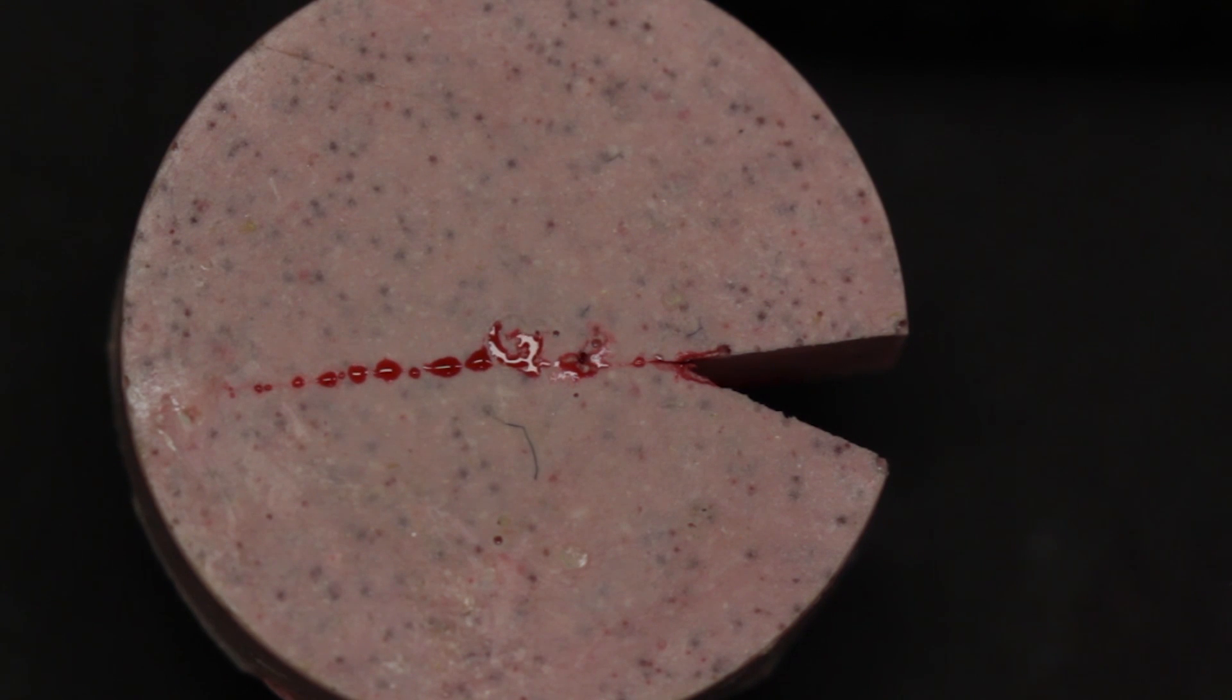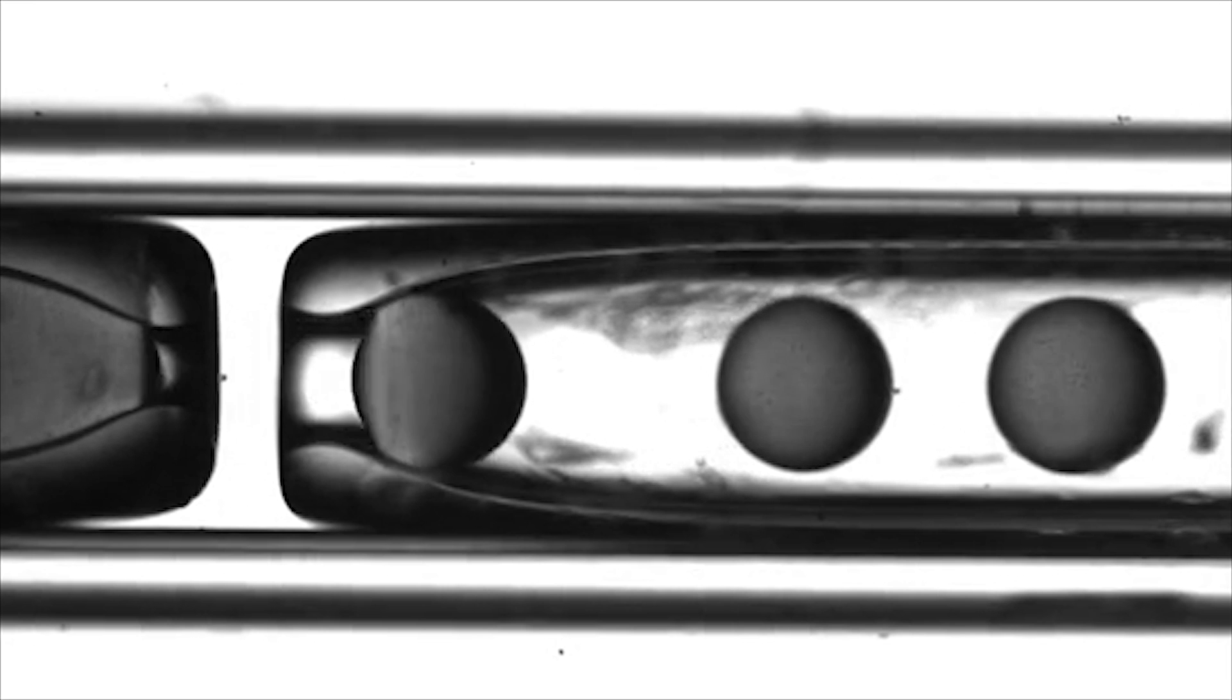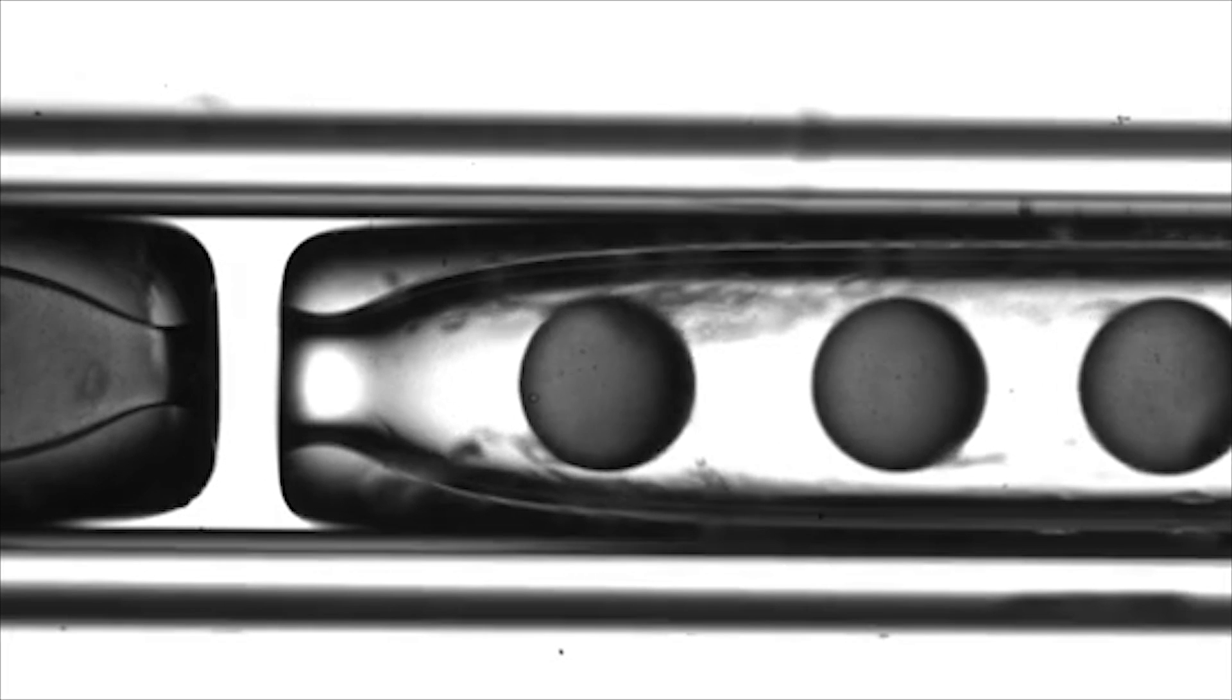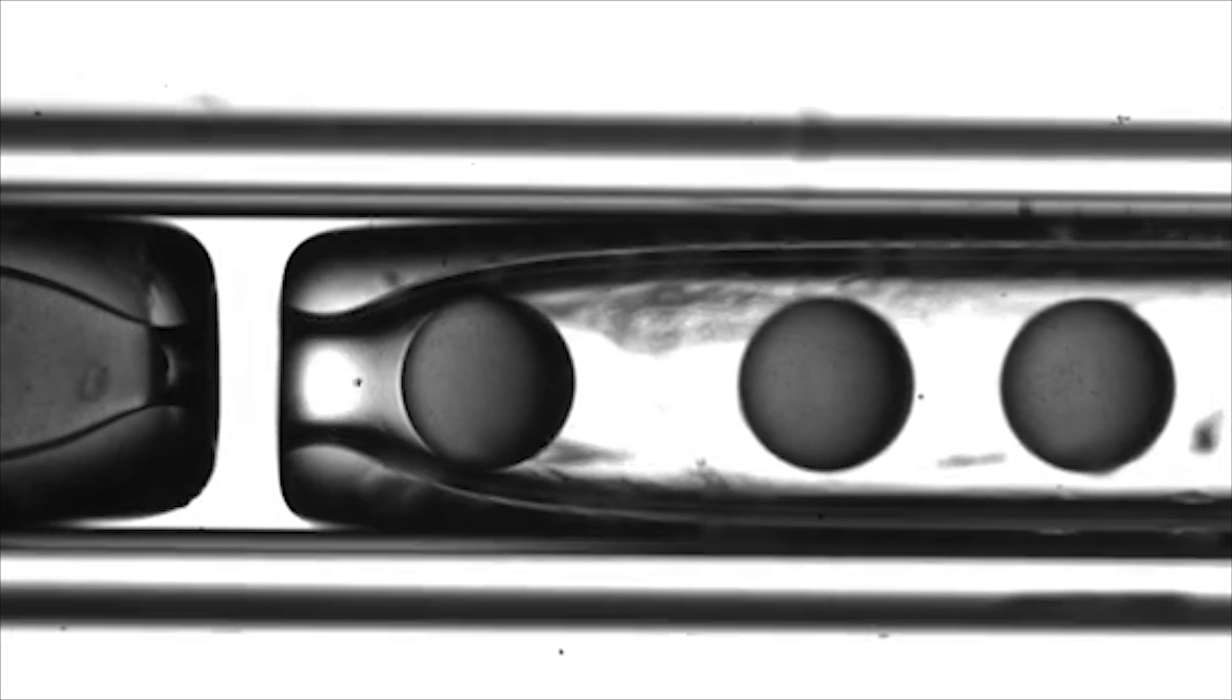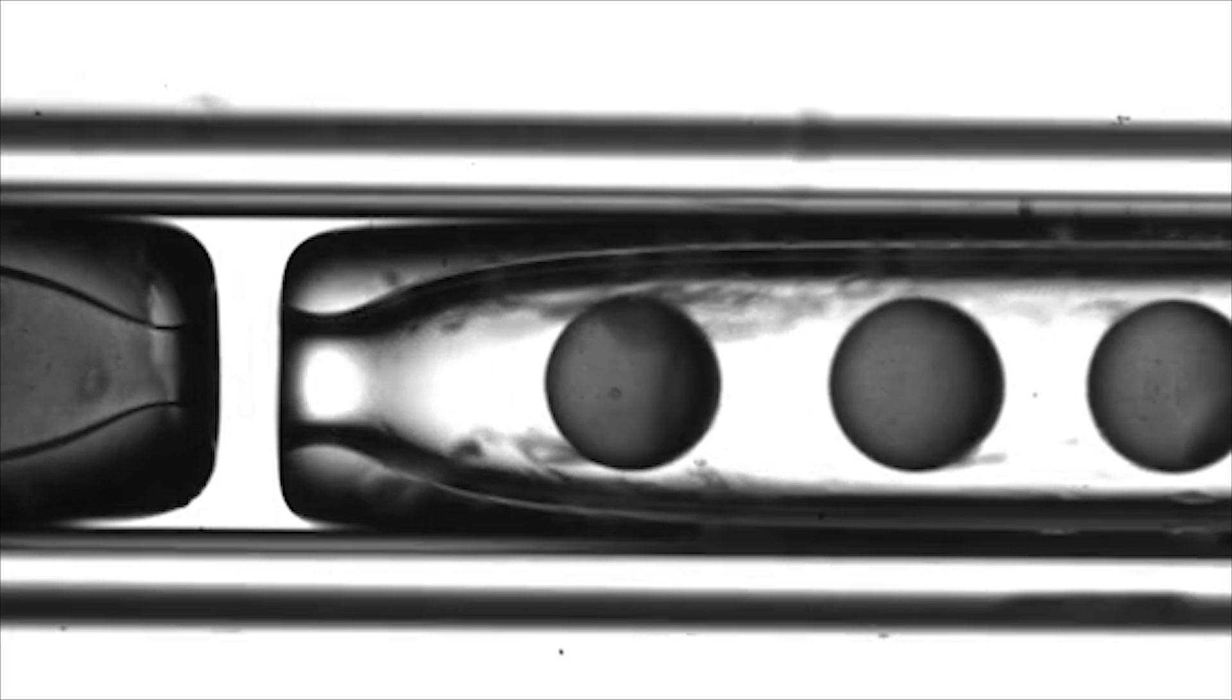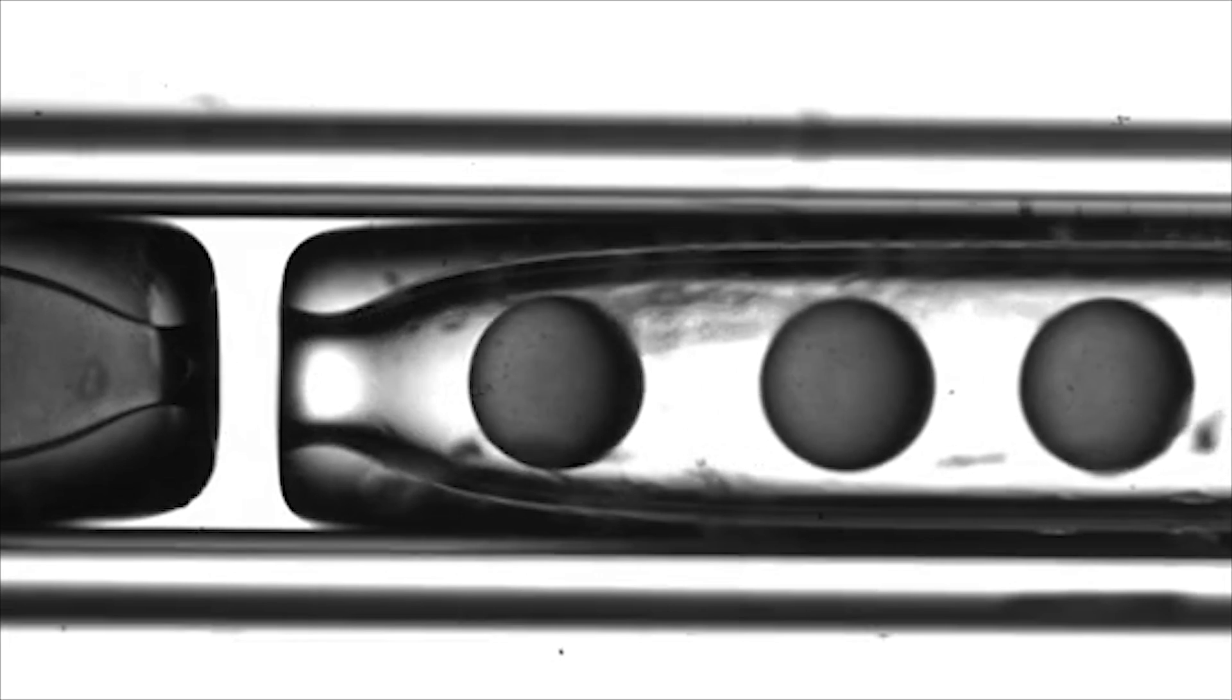To make capsules, we use emulsions, which are droplets of a liquid inside another liquid. Once the droplets form, we make a shell between the liquids. One of the liquids dries away, leaving capsules that look like solid powders but have the other liquid inside.